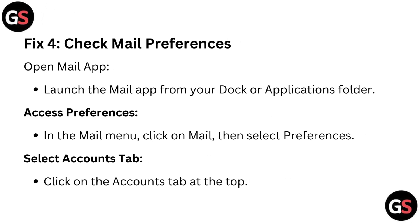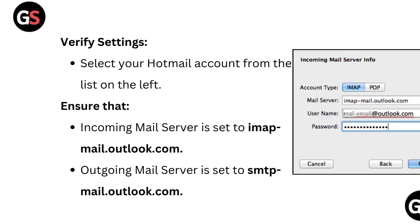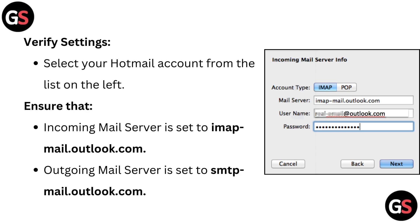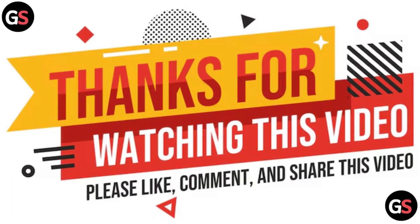Fix four: Check Mail preferences. Launch the Mail app from your Dock or Applications folder. In the Mail menu, click on Mail, then select Preferences. Click on the Accounts tab at the top. Select your Hotmail account from the list on the left and verify that the incoming mail server is set to imap.outlook.com and the outgoing mail server is set to smtp.mail.outlook.com.